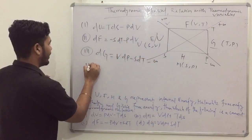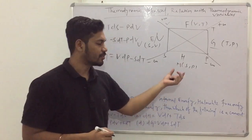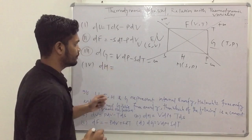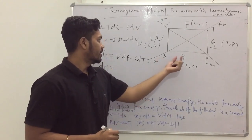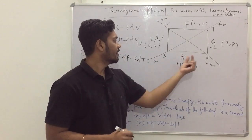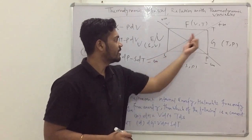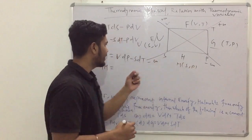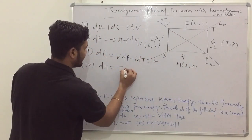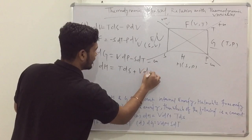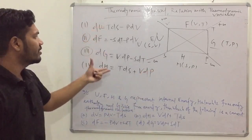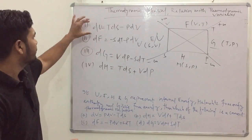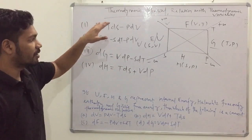For enthalpy H, it is a function of S and P. Both the entropy and pressure terms go from minus infinity to plus infinity, so both are positive. Therefore: dH = TdS + VdP. These are the four important thermodynamic relations giving the connection between the thermodynamic potentials and the thermodynamic variables.